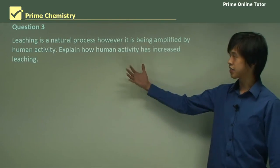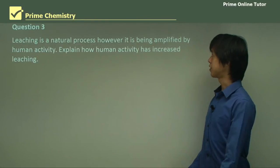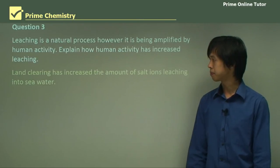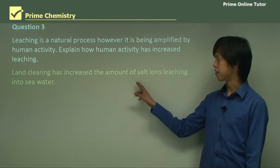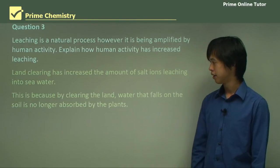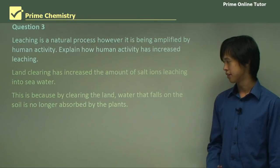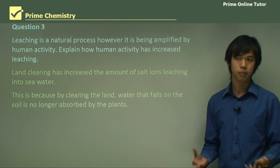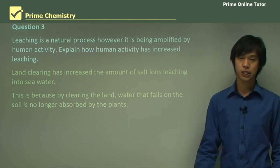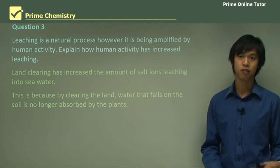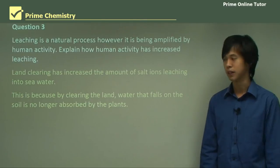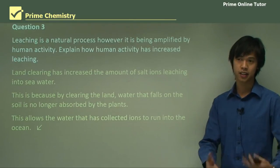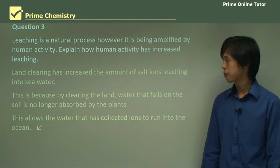Question three: leaching is a natural process, however it's being amplified by human activity. Explain how human activity has been increasing the leaching of salt ions into the water. Land clearing has increased the amount of salt ions leaching into seawater. That's our first statement. This is because by clearing land, water that falls on the soil is no longer absorbed by plants. As I mentioned before, the rain hits the soil, and sometimes the plants would absorb that rain before it can drag the salts down to the ocean. But by clearing the land, you're removing the plants, and you're removing what actually is absorbing the water. This allows the water that has collected ions to run into the ocean, and thus add ions to the seawater.